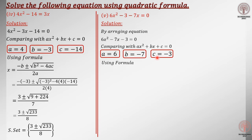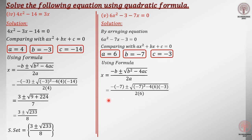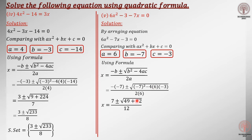Now, using the quadratic formula, putting the values one by one: minus will be as it is, b is minus 7, plus or minus — b squared is minus 7 squared, that is 49 — minus 4 times a times c, where a is 6 and c is minus 3. Denominator is 2 times 6. Minus minus gives plus: 49, minus minus gives plus — 4 times 6 is 24 and 24 times 3 is 72 — and the denominator is 12. This gives us 7, plus or minus — adding gives 121, divided by 12.